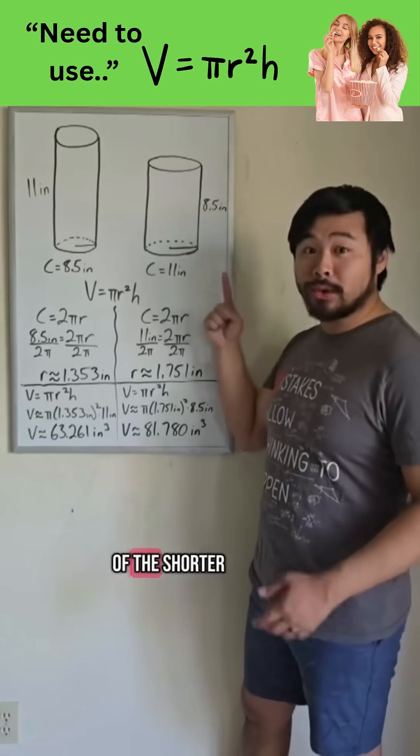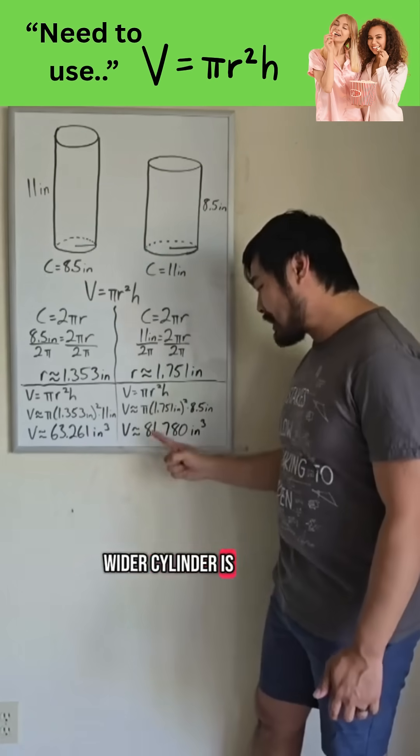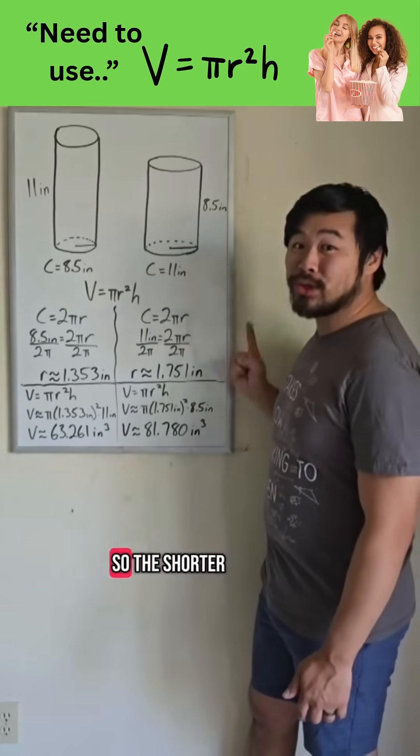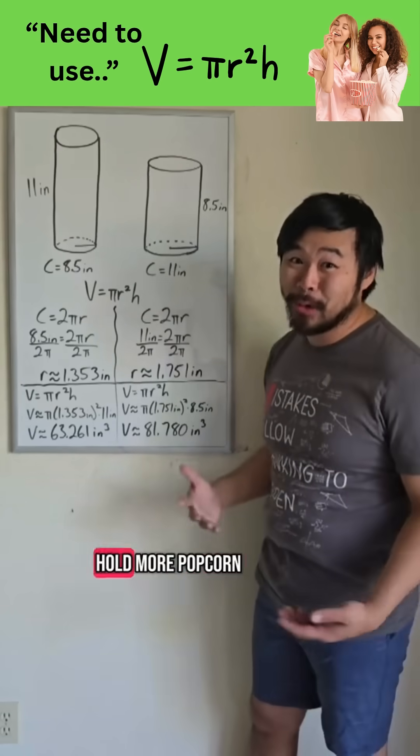whereas the volume of the shorter, wider cylinder is around 81.78 cubic inches. So the shorter, wider cylinder will hold more popcorn.